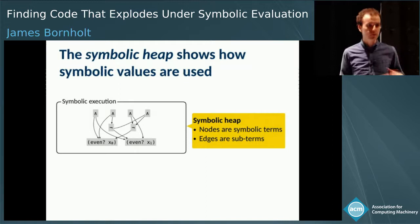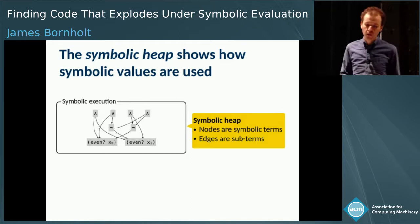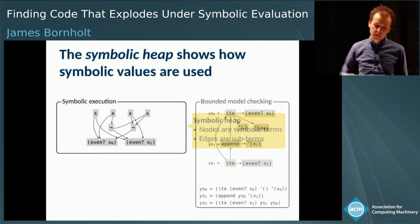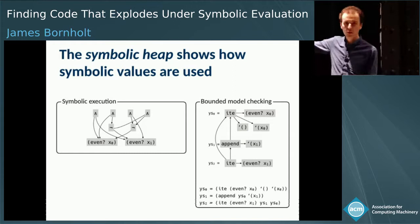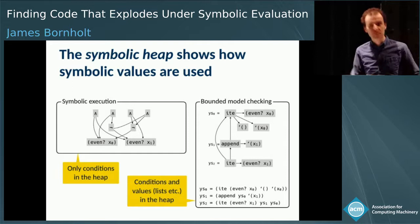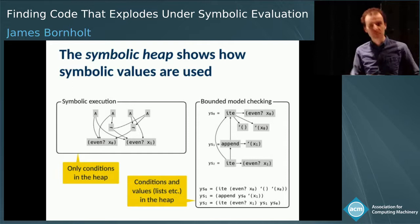We call the second data structure the symbolic heap. It summarizes how symbolic values are being used in your program. The nodes in the symbolic heap are the symbolic terms you're creating — symbolic variables, conjunctions of those variables, and so on — and the edges are subterm relationships. The symbolic heap for bounded model checking has list operations like append, cons, and list elements, whereas for symbolic execution we basically just have Booleans. This gets at the core distinction between the two techniques.